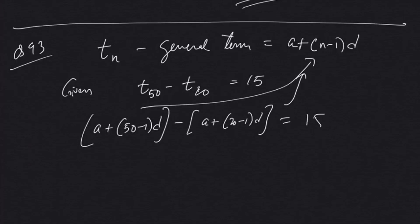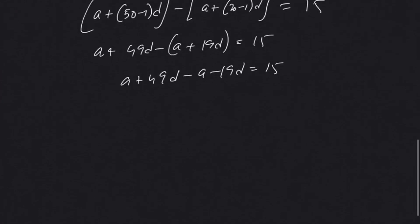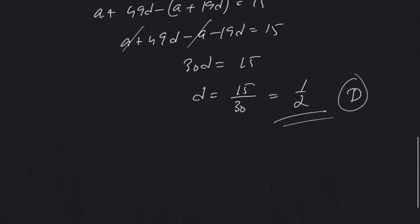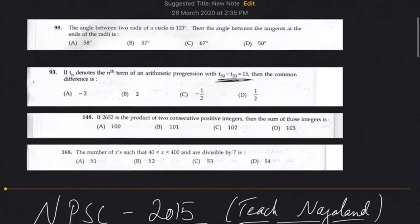A plus 49d minus a minus 19d equals 15. Plus a minus a, 49 minus 19d equals 15. 30d equals 15, so d equals 15/30. The answer will be option D, that is common difference is 1/2.